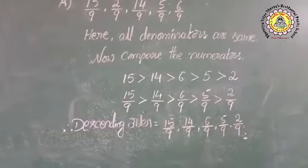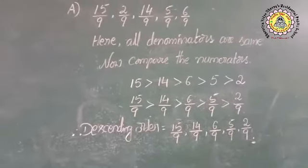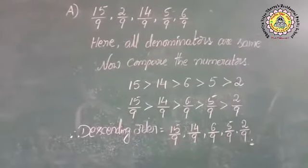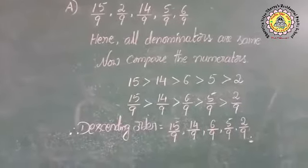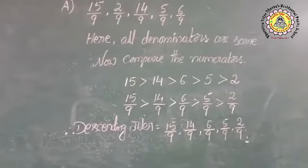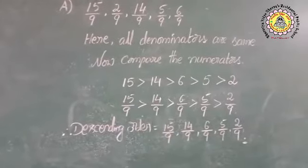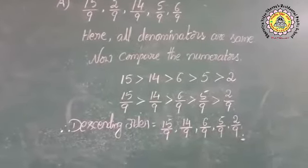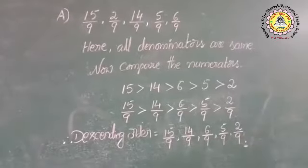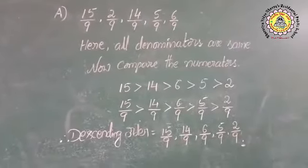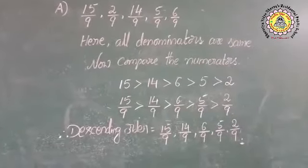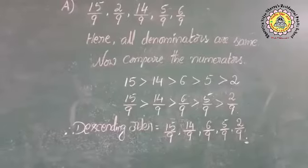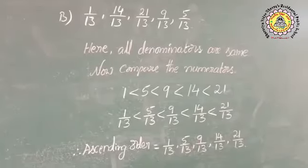Like that, 15 by 9 is greater than 14 by 9 is greater than 6 by 9 is greater than 5 by 9 is greater than 2 by 9. Therefore, our descending order is: 15 by 9, 14 by 9, 6 by 9, 5 by 9, and 2 by 9.